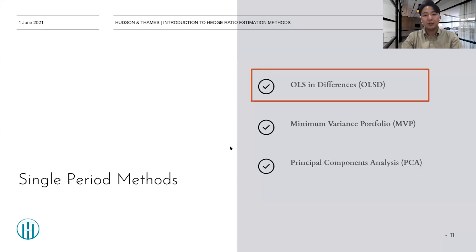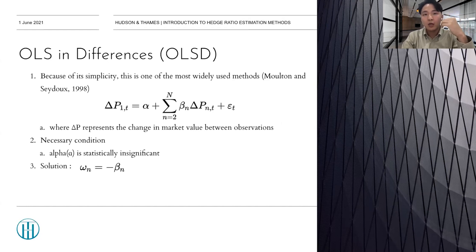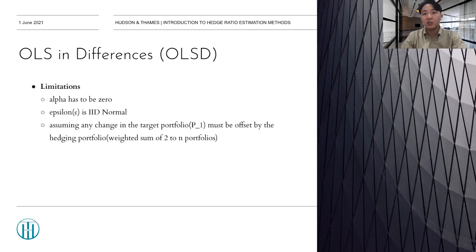So, we'll see the OLSD first. So, this OLS in differences, because of its simplicity, this is one of the most widely used methods. As the name implies, it utilized OLS in the differences of market values of portfolios. As the equation shows here, where delta P represents the change in market value between observations, the solution is W equals minus beta. So, here is a necessary condition that the alpha needs to be statistically insignificant, which means zero. And despite its simplicity, it still has a lot of limitations. As it is extremely restrictive condition as follows in this slide, it assumes that any change in target portfolio, like the P1, must be offset by the hedging portfolio, like P2 to Pn.